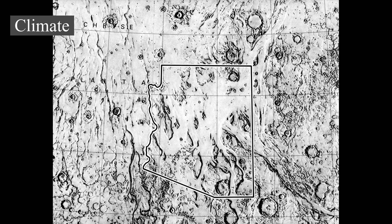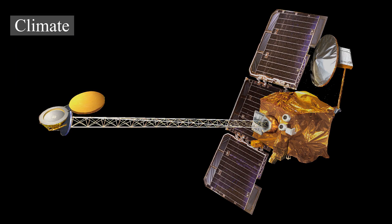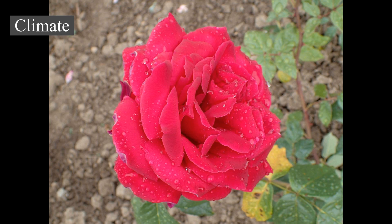Mars is near perihelion when it is summer in the southern hemisphere and winter in the north, and near aphelion when it is winter in the south and summer in the north. As a result, the seasons in the southern hemisphere are more extreme and the seasons in the northern hemisphere are milder. The summer temperatures in the south can be warmer than equivalent summer temperatures in the north by up to 30°C. Mars has the largest dust storms in the solar system, reaching speeds of over 160 km/h; they can vary from a storm over a small area to gigantic storms covering the entire planet.